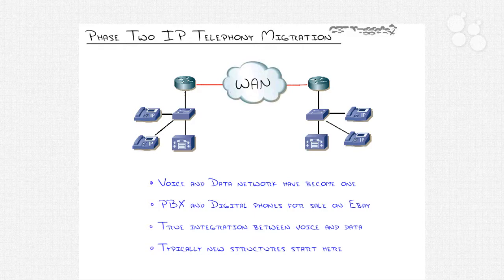Eventually the organization will want to move away from the digital world — the PBX goes away. Phase two, in the Cisco model, means you've moved to nothing but Cisco equipment: Cisco Call Manager, Cisco IP phones, Cisco switches, Cisco routers, and even Cisco SmartNet contracts. There is no PBX in phase two.